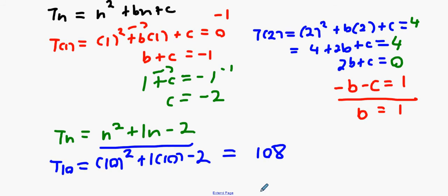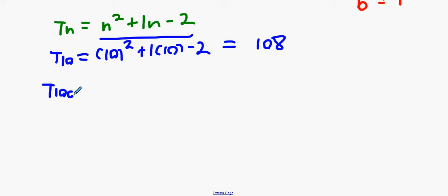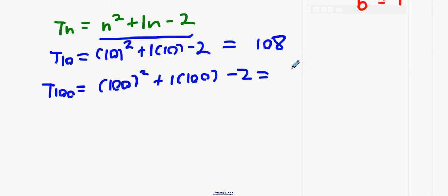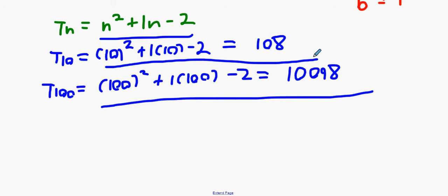Let's get T100. T100 is 100 squared plus one times 100 take away 2. Anybody get an answer for that? I think it's going to be a pretty big number. T100 is 10,098. You have to show all your workings. Anything you type into the calculator goes into your workings, otherwise you can lose a lot of marks. Alright, let's move on.